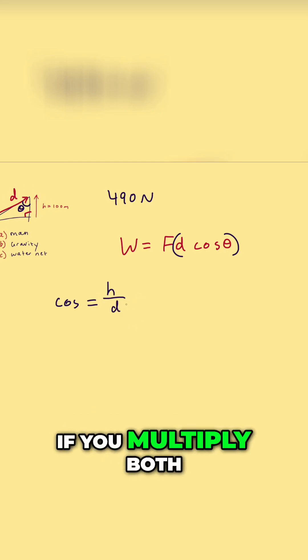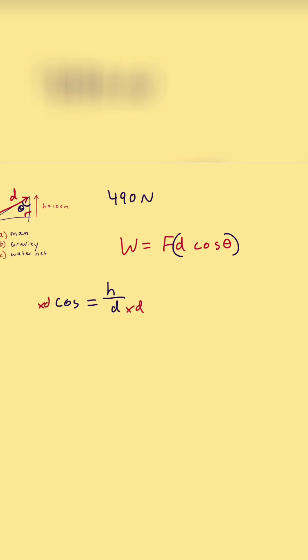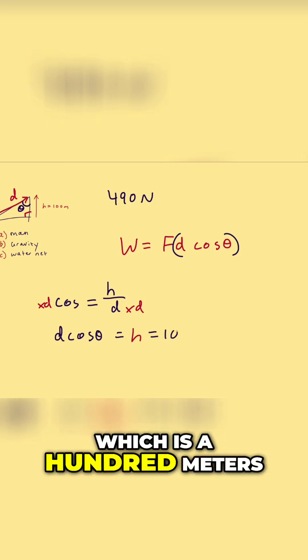If you multiply both sides by D, then you get D cosine equals height, which is 100 meters.